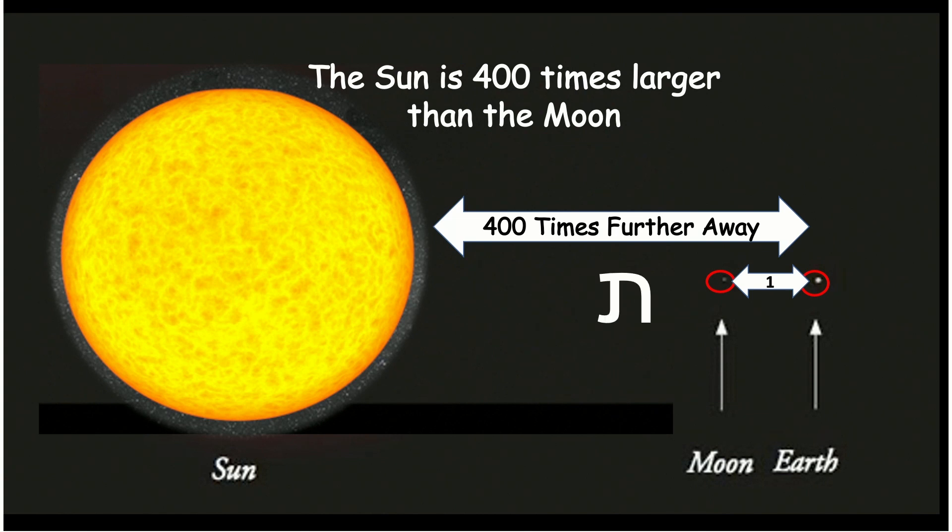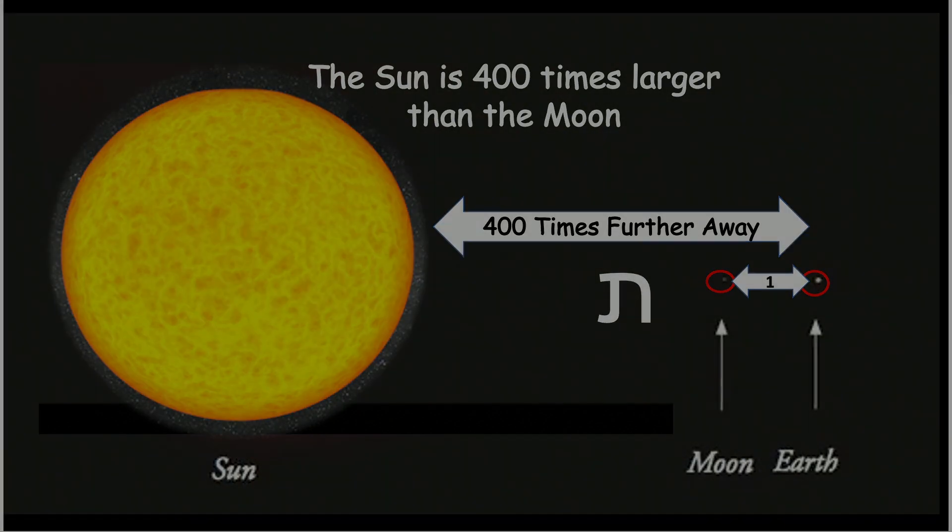The tav has a numerical value of exactly 400, and it means sign. So God put the sun and the moon in the heavens for signs, and you can only have an eclipse sign if it's 400 times larger and 400 times further away, and the tav, which means sign, is the numerical value of 400. Everything is there.